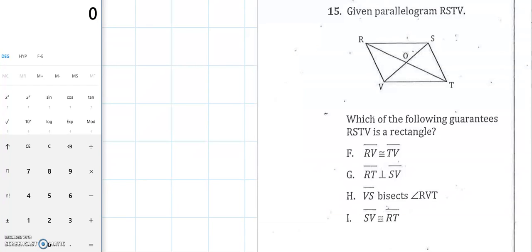Okay, problem number 15. Given that this is a parallelogram, how can we guarantee that this is a rectangle? To answer this question, you have to know what makes a rectangle a rectangle, how that differs from just being a regular parallelogram.